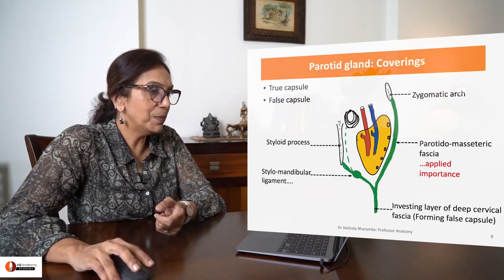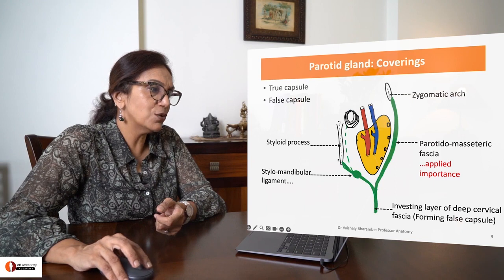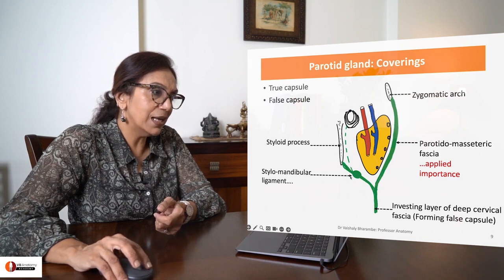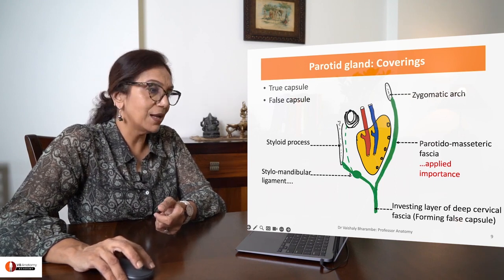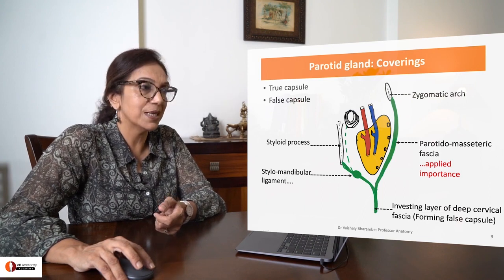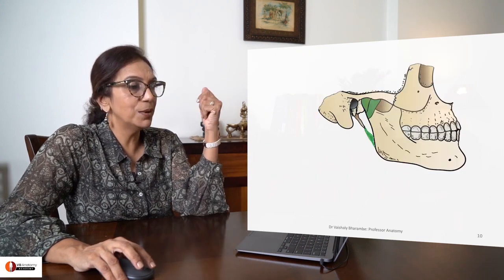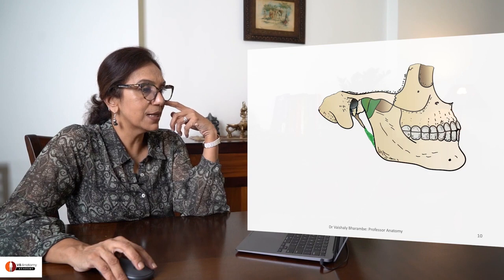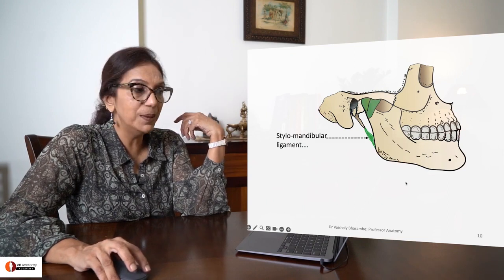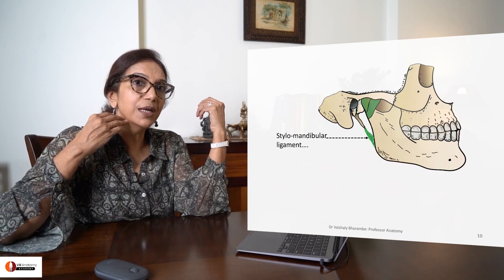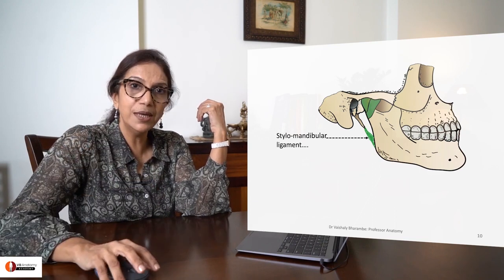On a deeper plane, you can see how it goes on to get attached to the styloid process, thickening in the middle to form the stylomandibular ligament. This is what the stylomandibular ligament looks like, going from the styloid process to the angle of mandible, separating your parotid gland from your submandibular gland.